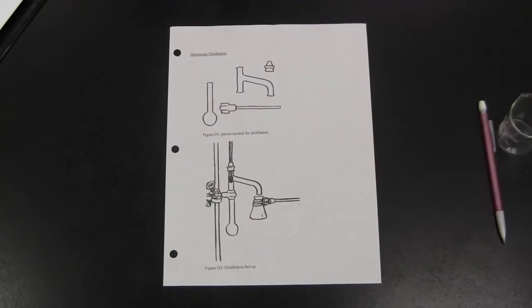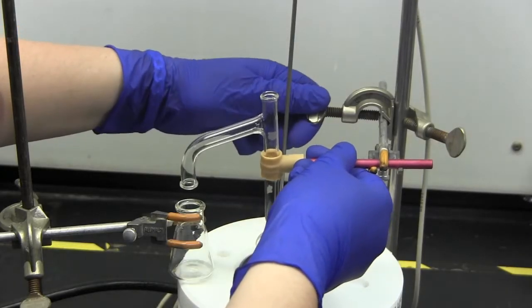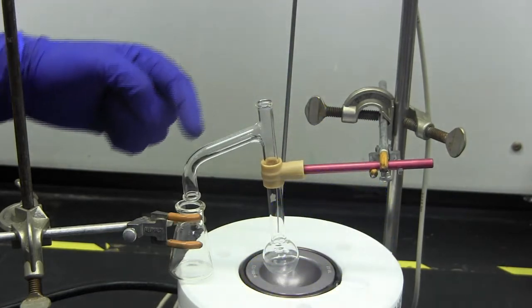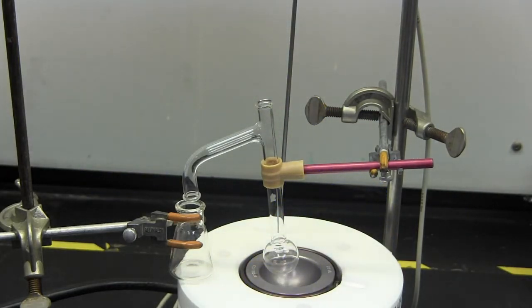Position a collection flask below the head of the distillation setup. The flask does not have to be attached, but make sure it will catch any drops that fall from the head. Angle the distillation apparatus slightly downward to help the precipitate fall into the collection flask.